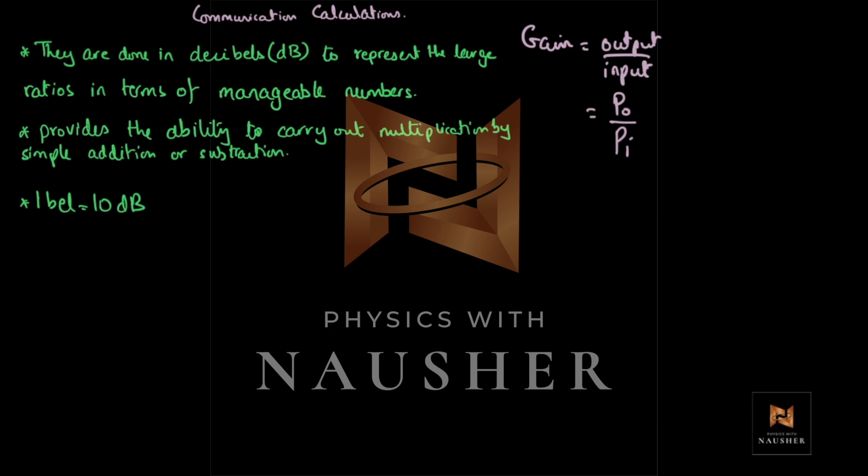Secondly, this is a mathematical reason that basically when you do it in decibels, and you take a log, the log converts multiplication to addition or subtraction. They could ask you for one mark, why do you take the readings to be in decibels? The answer could be to represent large ratios in terms of more manageable numbers. You must understand that one bell is equal to 10 decibels. The calculations that you will do will all be in decibels.